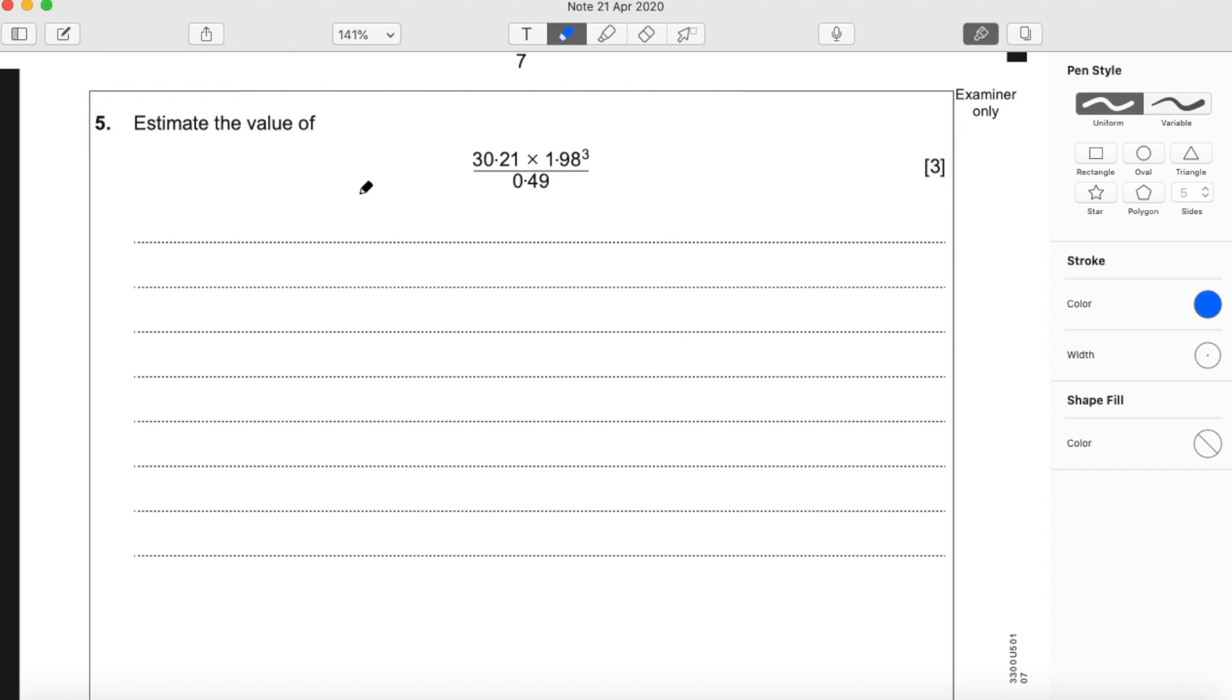Hello and welcome to question 5. Estimate the value of 30.21 times by 1.98 cubed divided by 0.49.